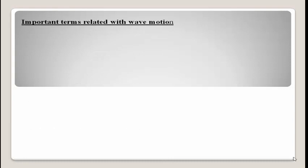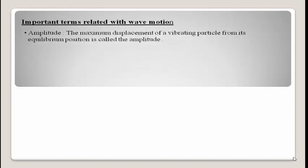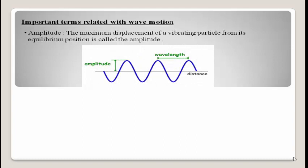There are important terms related to wave motion. The first term is amplitude. Amplitude is the maximum displacement of a vibrating particle from its equilibrium position, also called mean position. As you see in this diagram, the straight horizontal line is taken as the line of zero disturbance, or mean position, or equilibrium position.